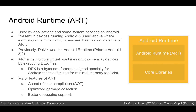ART is written to run multiple virtual machines on low-memory devices by executing DEX files, which is a bytecode format designed specifically for Android and optimized for minimal memory footprint. ART also has major features like ahead-of-time compilation, optimized garbage collection, and better debugging support. It provides better debugging support by including a dedicated sampling profiler, detailed diagnostic exceptions, and crash reporting. It also provides the ability to set specific watchpoints to monitor specific fields.